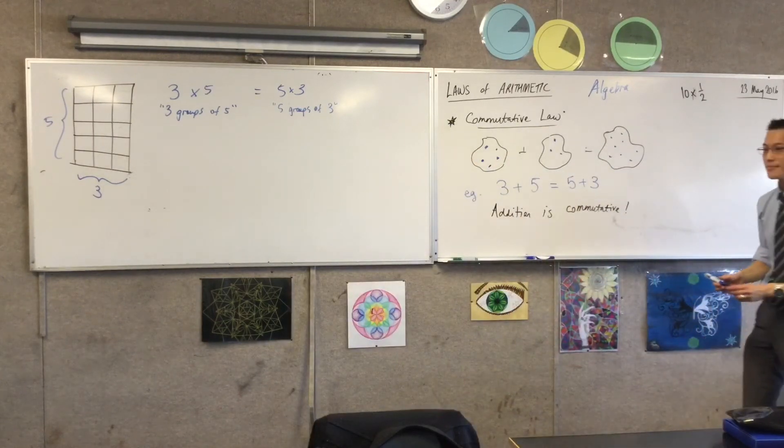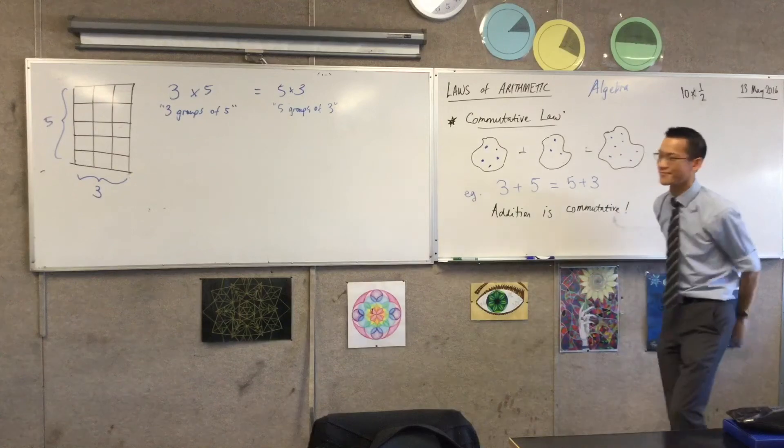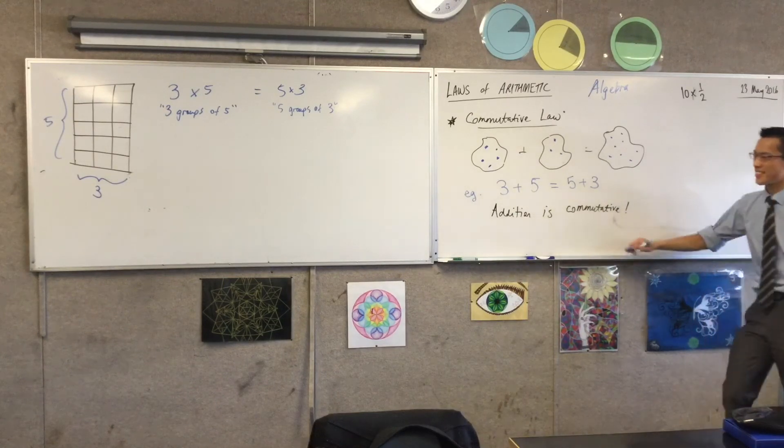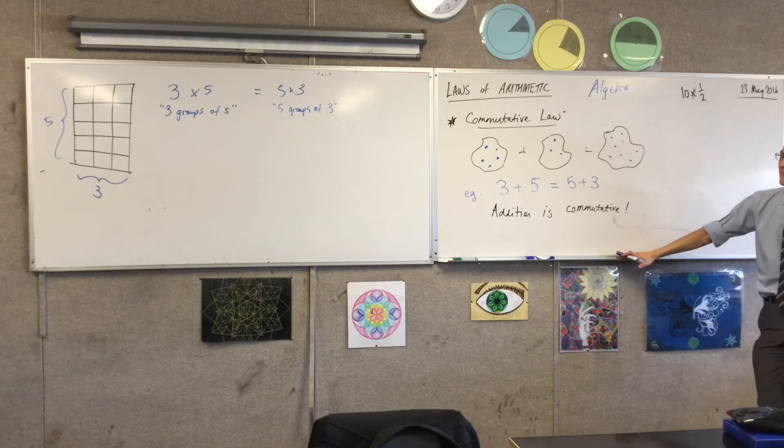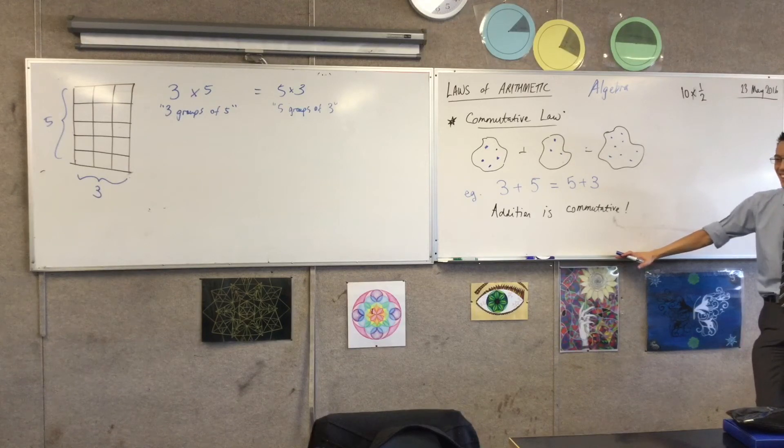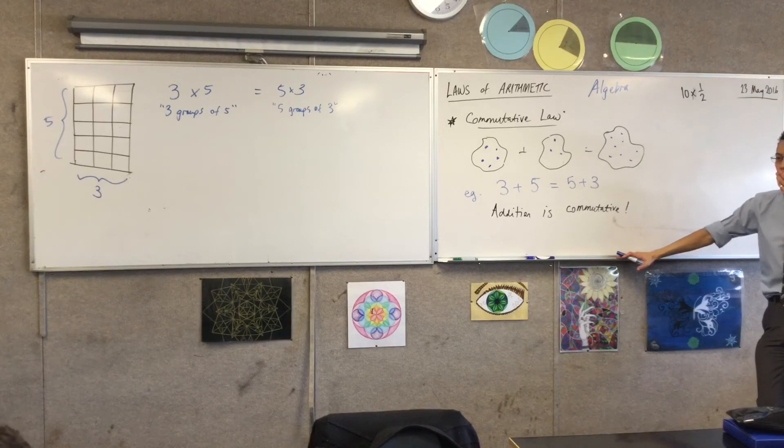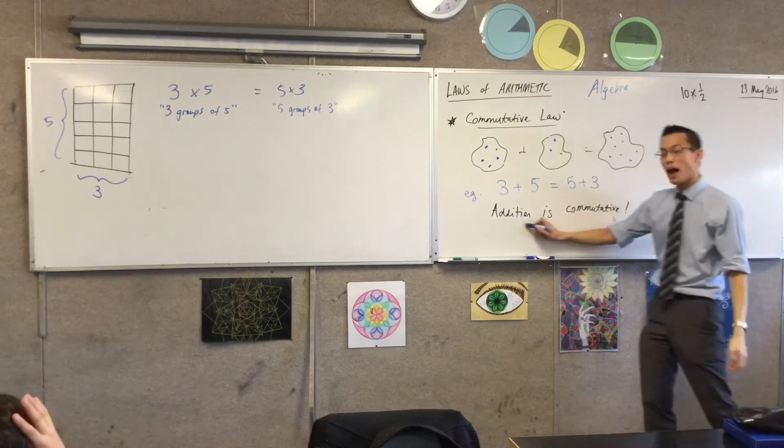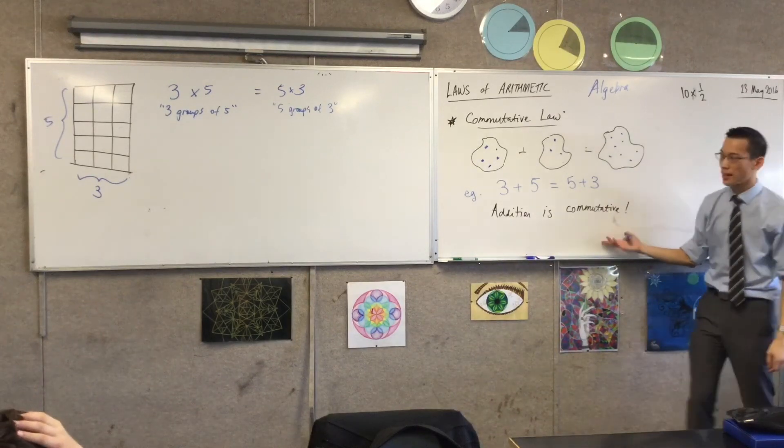So is commutative law, like, two different numbers where you can switch them around and it'll give them the same answer? That's exactly right. That's exactly right. So if you're adding anything, you can switch them.